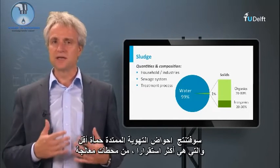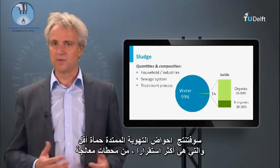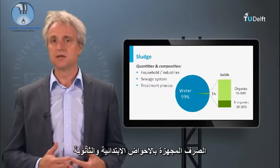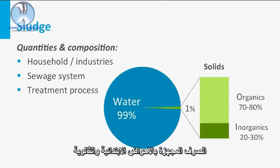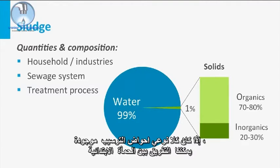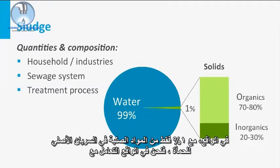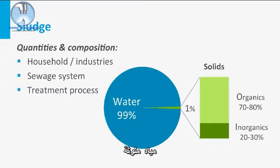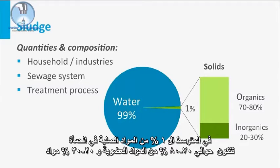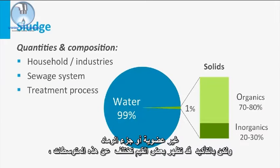Extended aeration tanks will produce less sludge, which is more stabilized, than STPs equipped with both primary and secondary clarification. If both types of clarifiers are present, we can roughly differentiate between primary sludge and secondary sludge. Both types of sludge largely consist of water — in fact, with only 1% of solids in the original sludge stream, we are dealing with polluted water. On average, the 1% sludge solids consist of about 70–80% organic matter and 20–30% of inorganic residues, or ash fraction, though values deviating from these averages certainly appear.